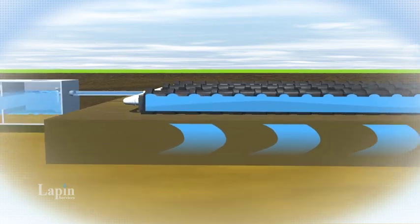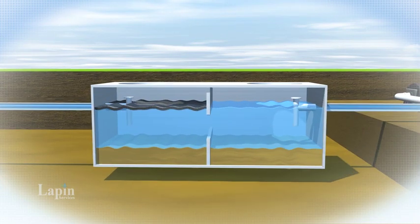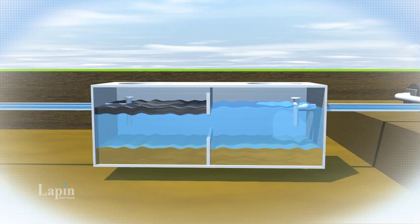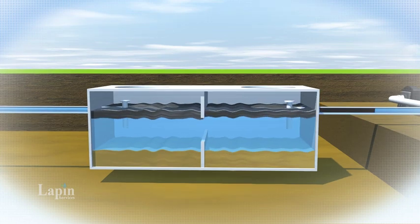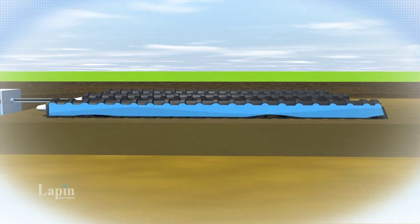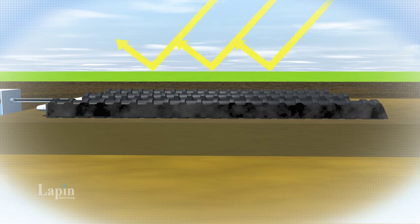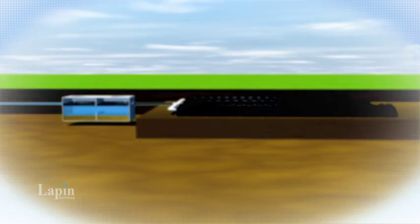Let's see an example of what happens when a system is not maintained. Solids in the tank will build up to the outlet tee and flow into the drain field. This will clog the soils, prevent water from absorbing, and back up the system. This will cost you thousands of dollars to fix.